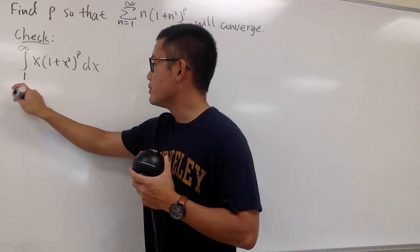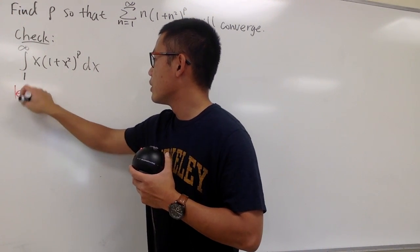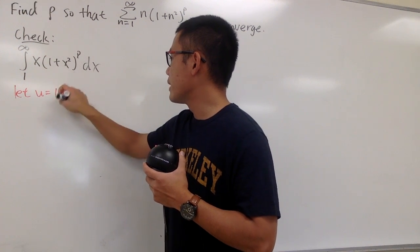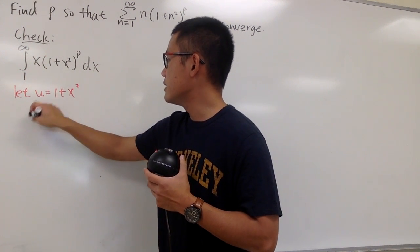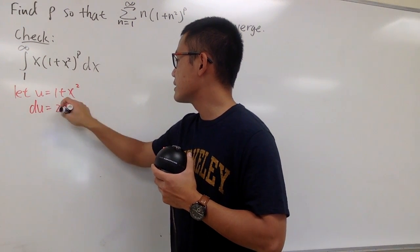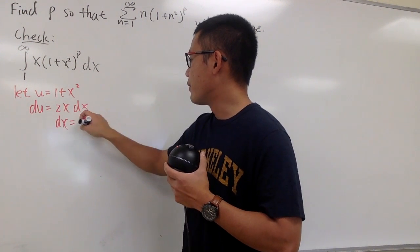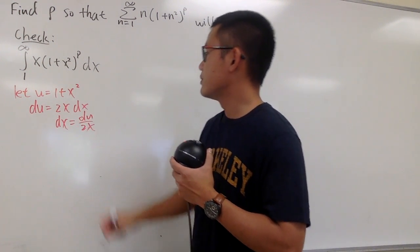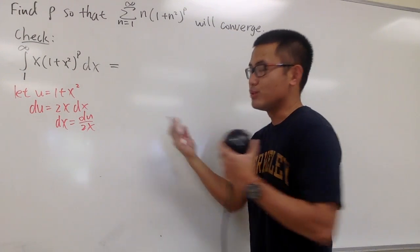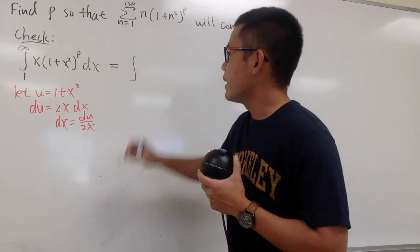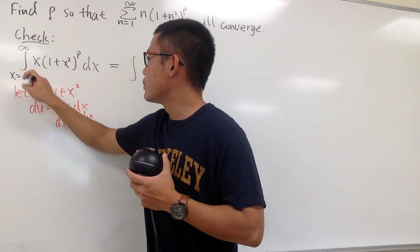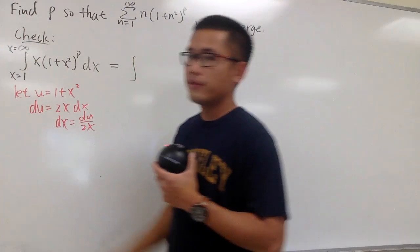To take this off, we can let u equals 1 plus x squared, and then do the usual business. du will be 2x dx, so dx will be du over 2x. I can take this into the u world, and then we just do everything there. When x equals 1, x goes to infinity.